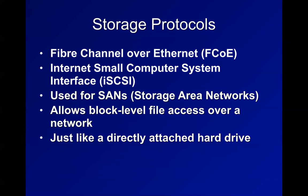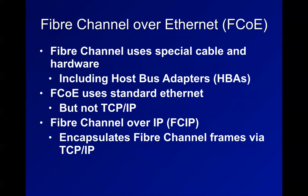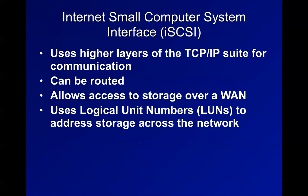Fiber Channel uses special cable - 'fiber' refers to the logical layout with many parallel wires forming a fiber. Fiber Channel over Ethernet uses Ethernet but not TCP/IP. These are all short-range protocols used within a data center. iSCSI lets you route storage devices over a LAN or WAN to access storage devices remotely - this is what's happening with services like OneDrive and Dropbox.